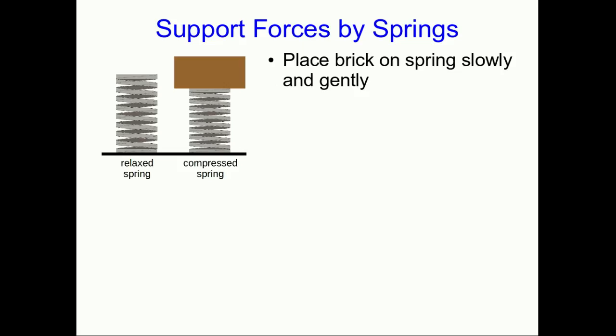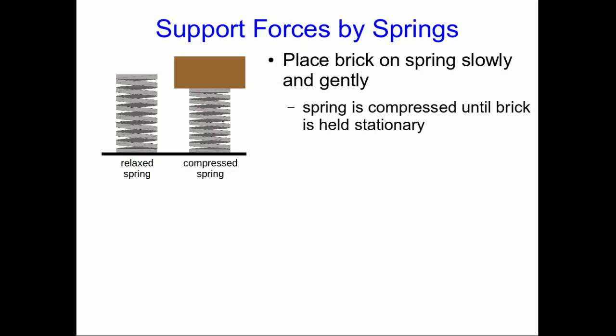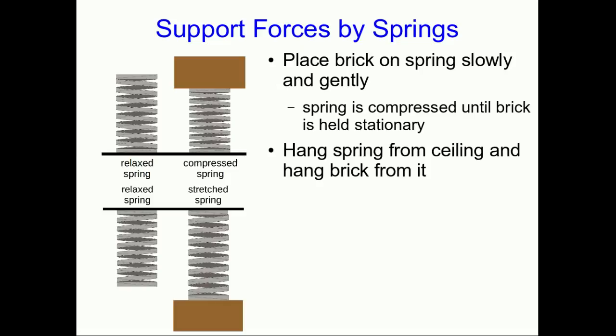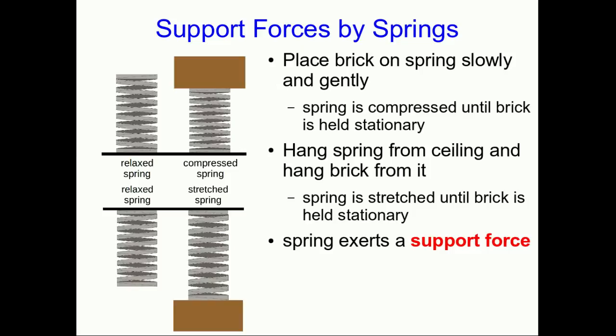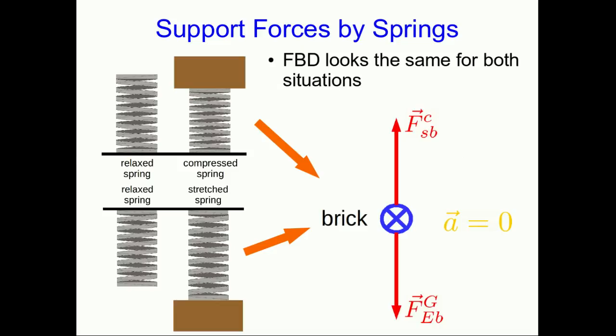Suppose you have a spring standing vertically on the floor. If you take a brick and slowly and gently lower it onto the spring, then the spring will compress until the point where the brick is held stationary, and at that point it stops compressing and everything is in equilibrium. Similarly, if you hang the spring from a ceiling and then hang the brick from it, slowly and gently, the spring will stretch until the brick is held stationary. Because the spring is supporting the brick in either case, we might call this a support force. In both cases, the brick has a downward gravitational force due to the earth and an upward contact force due to the spring. Because it's being held stationary with acceleration zero, we know those two forces are equal in magnitude, and the free-body diagram looks exactly the same for both cases.